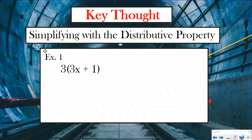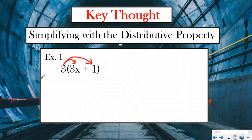Here we have an example. Let me show you how to simplify with the distributive property. Basically, we're going to distribute the three out — the number outside the parentheses — to both the numbers inside the parentheses. So instead of grouping these inside, we are going to be doing three groups of 3x plus three groups of one and then adding them together. So if I simplify this with the distributive property, I would have three times 3x, which is 9x, plus three times one, which is three.